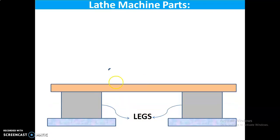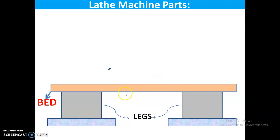Second part — bed. The bed of the lathe machine is the base on which all the other parts of the lathe are mounted. It is made of cast iron or nickel cast iron, and is supported on broad box section columns. The bed carries three major units: headstock, tailstock, and carriage.